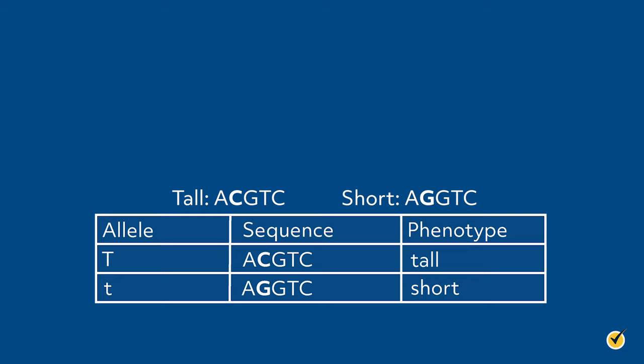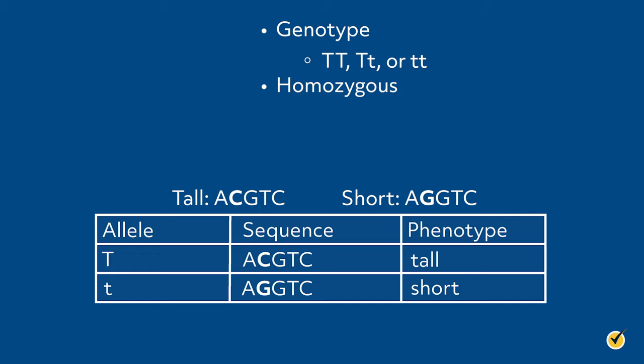We can assign arbitrary uppercase and lowercase letters to our alleles to keep them organized. Using the letter T, the possible allele combinations are TT, Tt, or tt. These are known as the genotype — the actual alleles present for a single trait. Individuals that carry the same alleles are homozygous for that trait, so for height you can be homozygous TT or tt. Individuals that carry different alleles are heterozygous, with the genotype Tt.